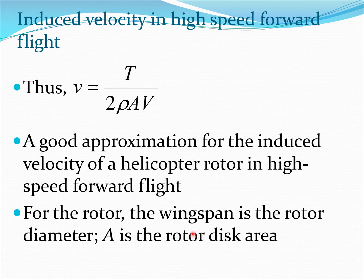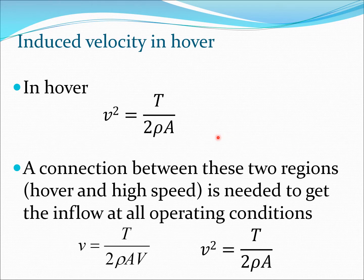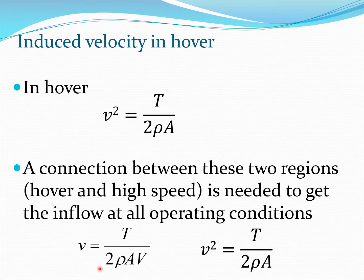For a rotor, the wingspan is the rotor diameter, so A is the area of the rotor disc: A = πR² where R is the rotor radius. Now looking at the second extreme flight condition — hovering — we have already derived v² = T / (2ρA). These are the two extreme flight conditions: zero forward speed gives v² = T / (2ρA), and high forward speed gives v = T / (2ρAV) where V is the forward speed.